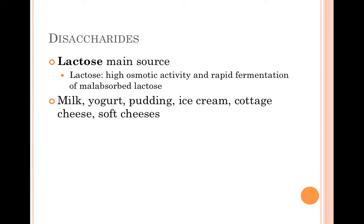The second category is disaccharides. The main source of disaccharides is lactose. Lactose is highly osmotic and rapidly fermented when not absorbed. Sources high in lactose are milk, yogurt, pudding, ice cream, cottage cheese, and soft cheeses.